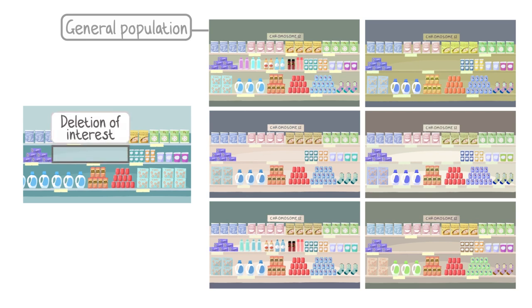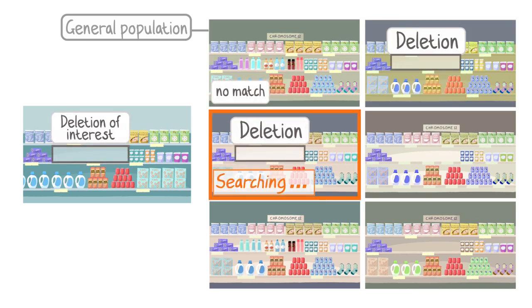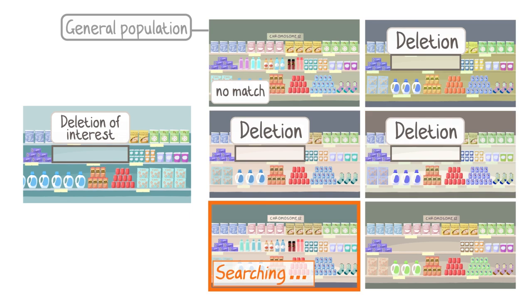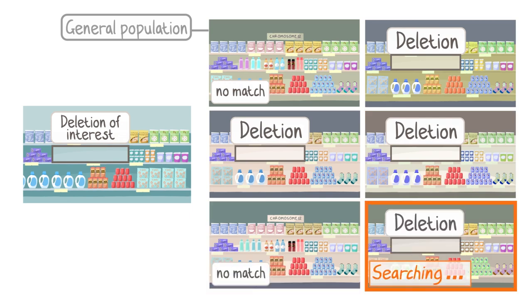When a scientist sees a deletion or duplication that is seen in many people in the general population, it is probably harmless and we don't need to know about it.